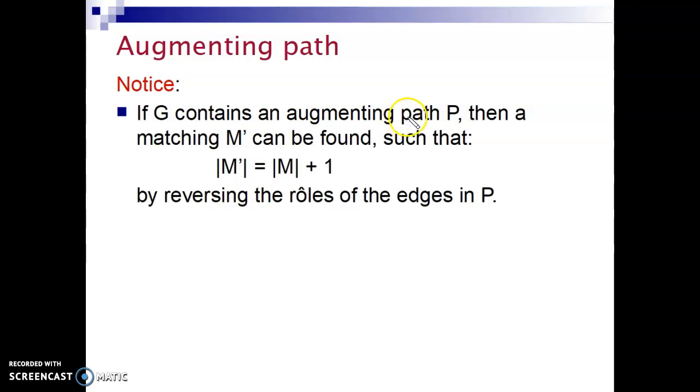If a graph G contains an augmenting path P, let's call this path P, then a matching M prime, that is a new matching, can be found such that this new matching will have one more edge than the previous matching. How do we do this? By just reversing the roles of the edges in the path. So what does that mean?